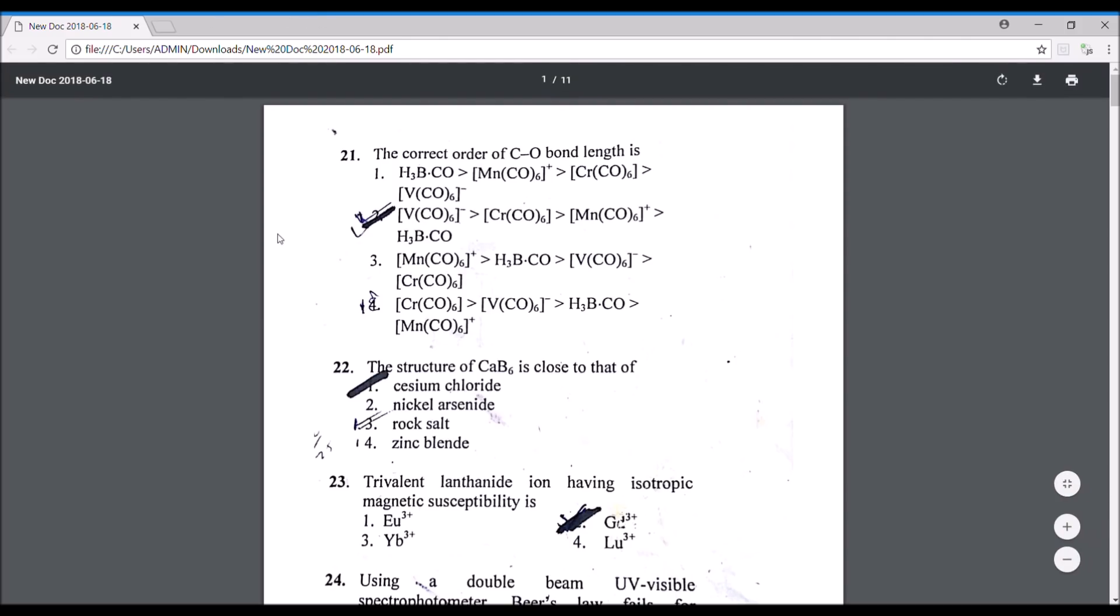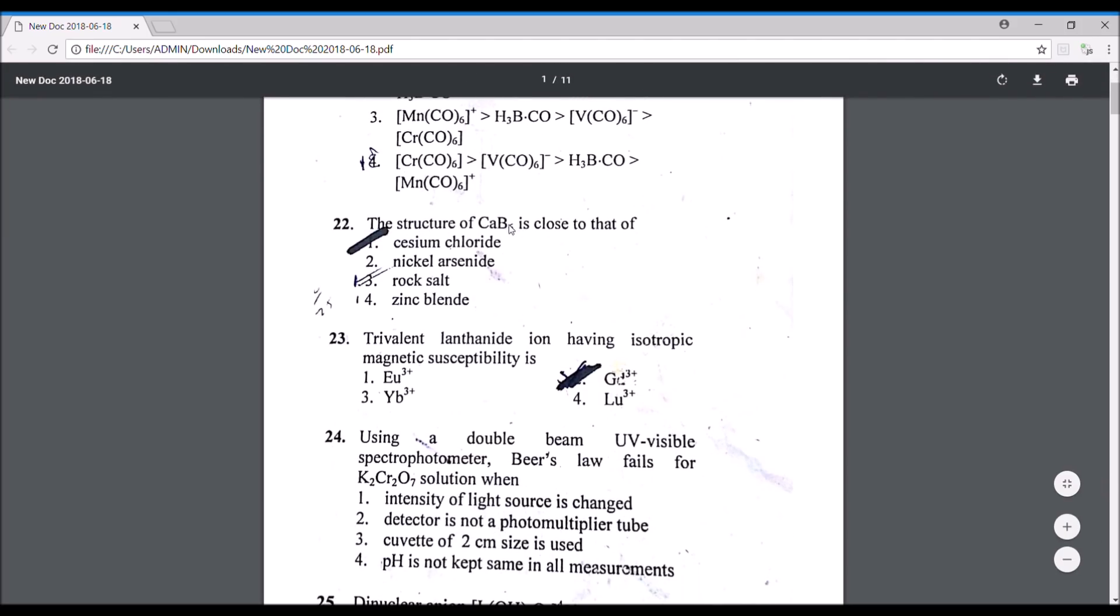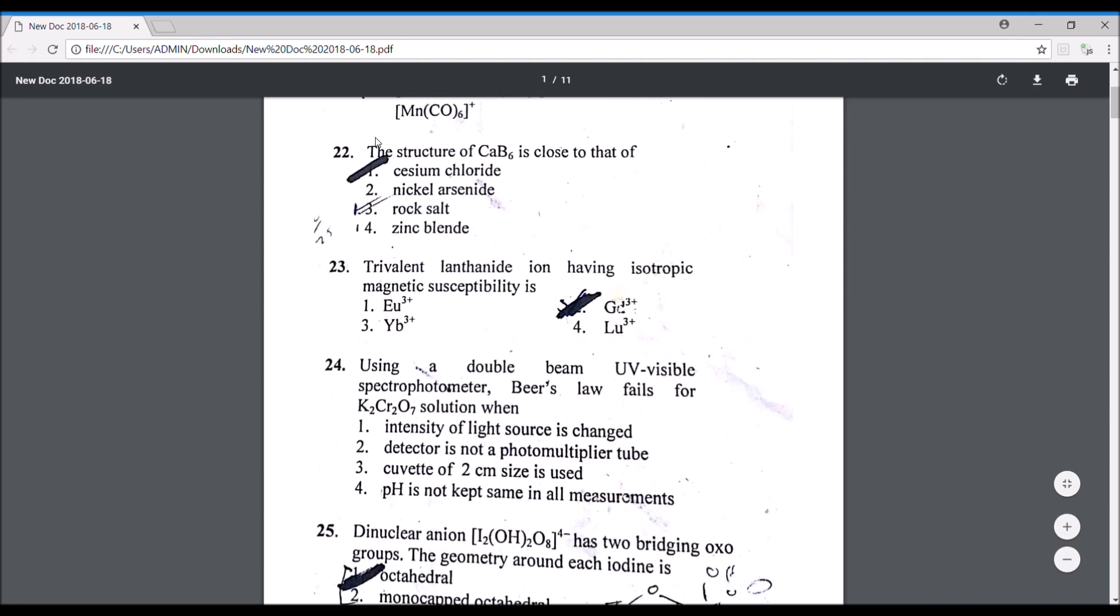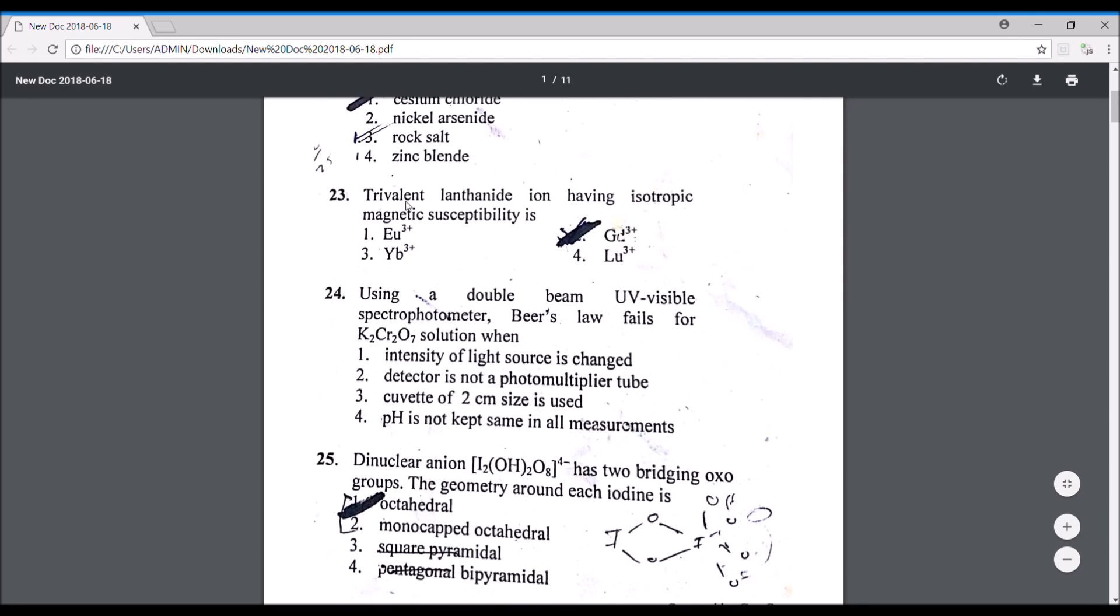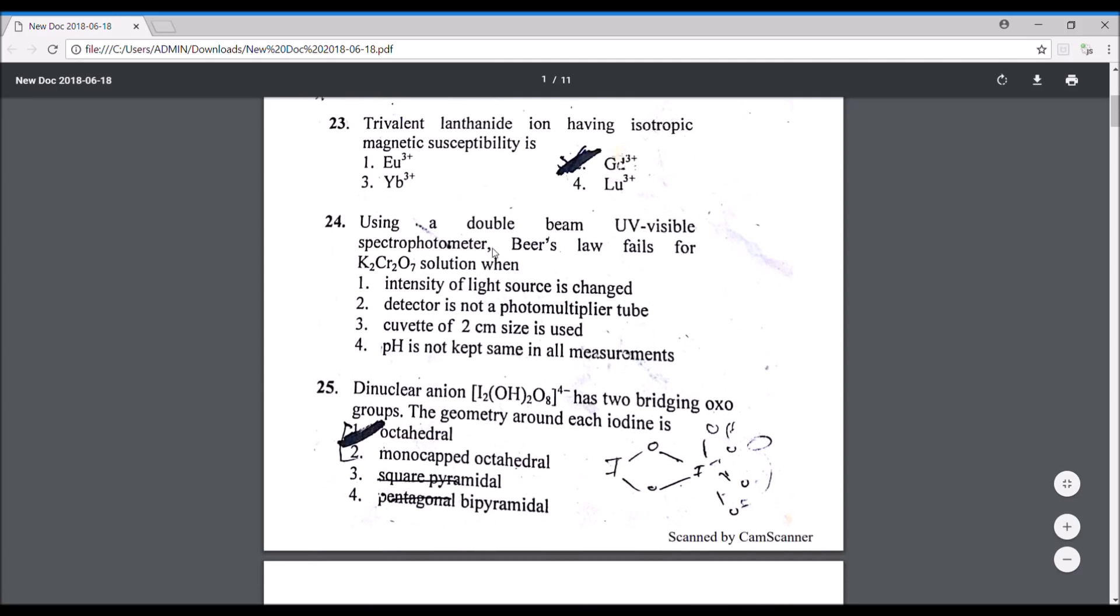This question was about the correct order of C-O bond length and the correct answer is option number two. I would not explain the answer, I'll just tell you the correct answer as of now and maybe later I'll explain. The structure for calcium hexaborane complex is close to that of cesium chloride. This I have found in a book, so I have a reference. The trivalent lanthanide ion having isotropic magnetic susceptibility is gadolinium 3+, because in the +3 oxidation state it will have an electronic configuration of 4f7. Using a double beam UV-visible spectrophotometer, Beer's law fails for K2Cr2O7 solution when the pH is not kept the same in all measurements.